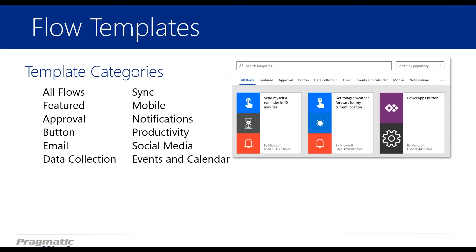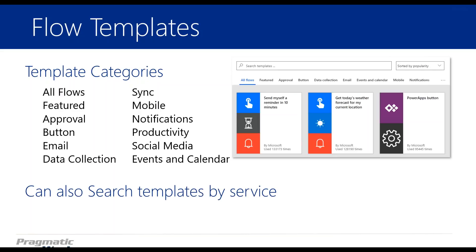Different categories of templates are available on the templates page: all flows featured, approval flows — where you can start an approval process — buttons you can have on your phone, email trigger flows, and more. There are all kinds of different flows here. You can also search the templates by service — if you're looking for specifically Outlook, MailChimp, Twitter, or something else, you can search for that service and see all templates related to it.